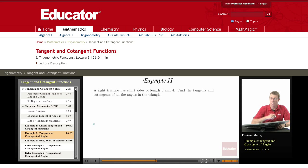Next example, we're going to look at some right angle triangles and try to work out some trigonometry there. We're given that a right triangle has short sides of length 3 and 4, and we're trying to find the tangents and cotangents of all the angles in the triangle.